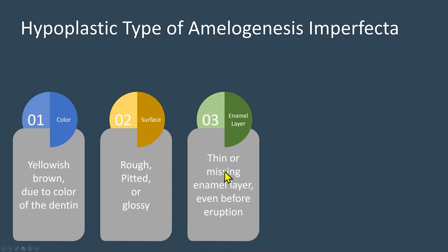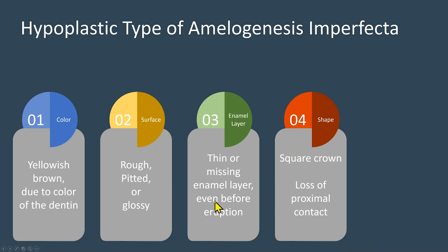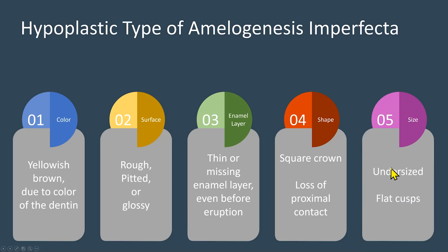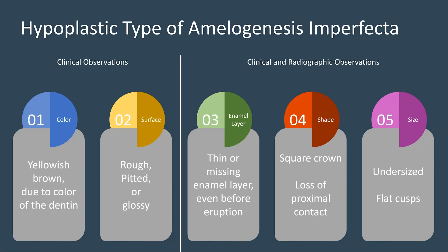The enamel layer is thin or missing even before eruption. The shape of the crown is square with loss of proximal contact. The size is usually an undersized crown with flat cusps undergoing attrition. Initially, we may see pointed picket fence cusps. These are clinical and radiological observations.